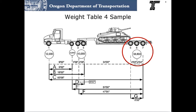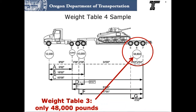The difference between Weight Table 3 and Weight Table 4 is that Weight Table 4 allows more weight on less space, but there are more bridges and roads that cannot be traveled or require traffic control. In this example, the spacing between the three axles is 8 feet 6 inches. If this combination were trying to make the weights allowed on Weight Table 3, only 48,000 pounds would be allowed on the triple axle group on the trailer.